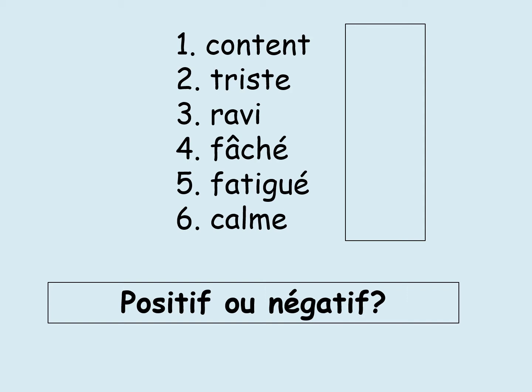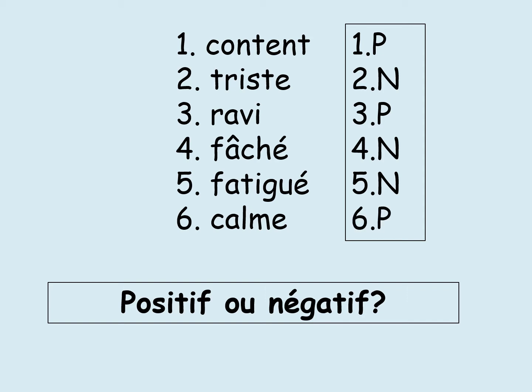Let's have a look and see if you've got them right. Numéro un, content — positif. Numéro deux, triste — négatif. Numéro trois, ravi — positif. Quatre, fâché — négatif. Cinq, fatigué — négatif. Et finalement six, calme — positif.